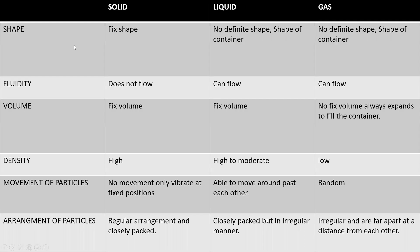Solid, liquid, and gas — these are the three states. Some key properties to compare include fluidity, volume, density, movement of particles, and arrangement of particles. Solids have a fixed shape. Liquids do not have a fixed shape; they take the shape of their container.